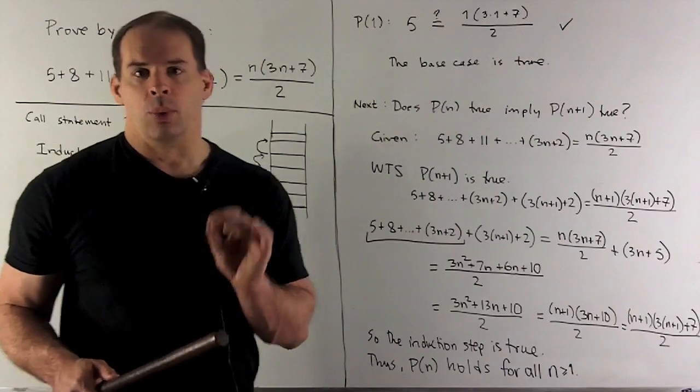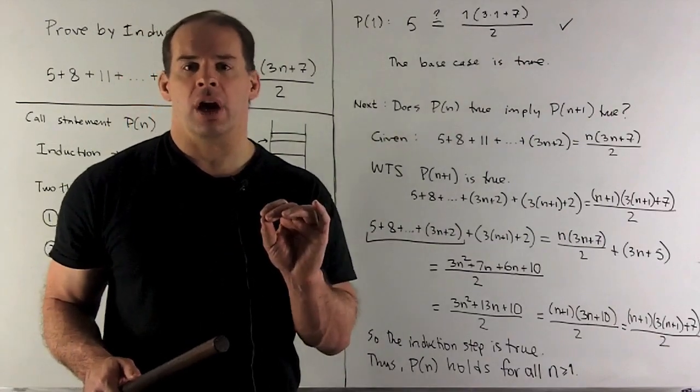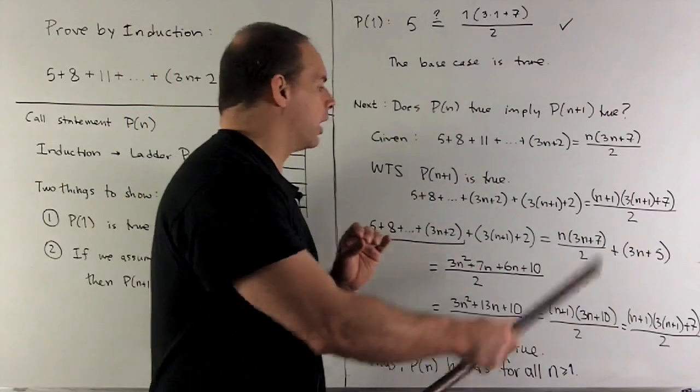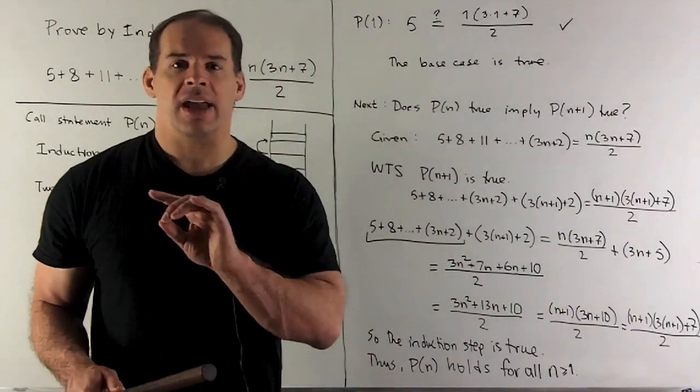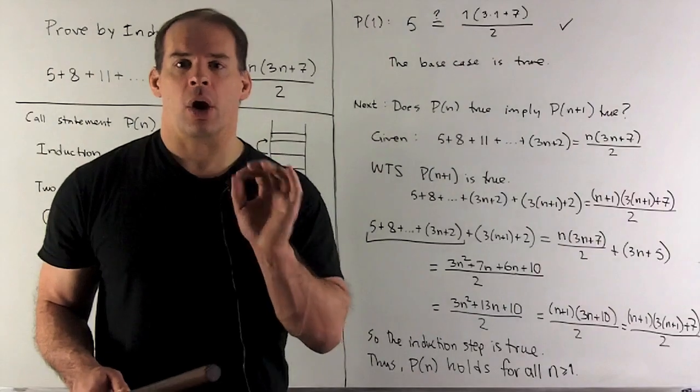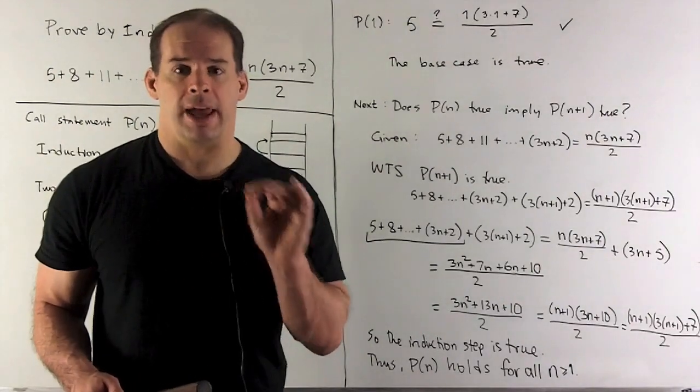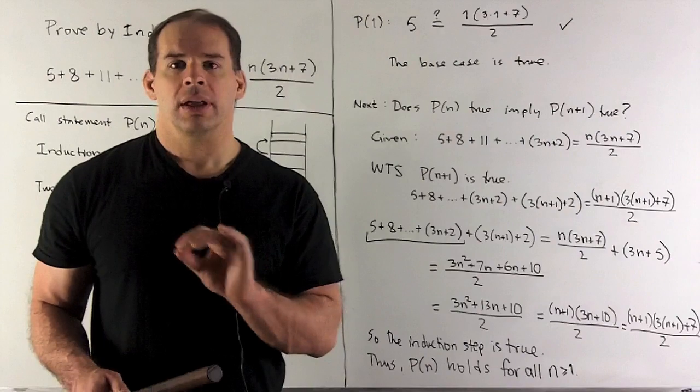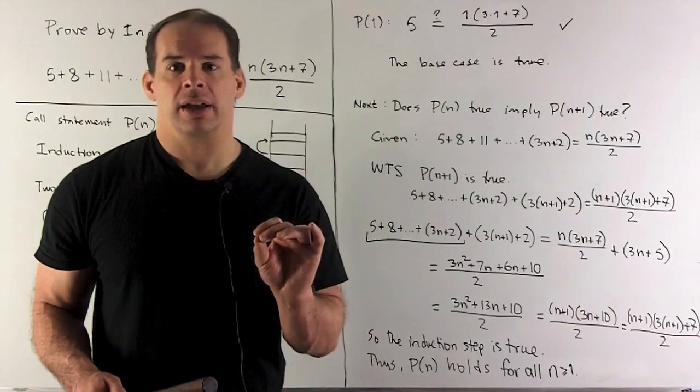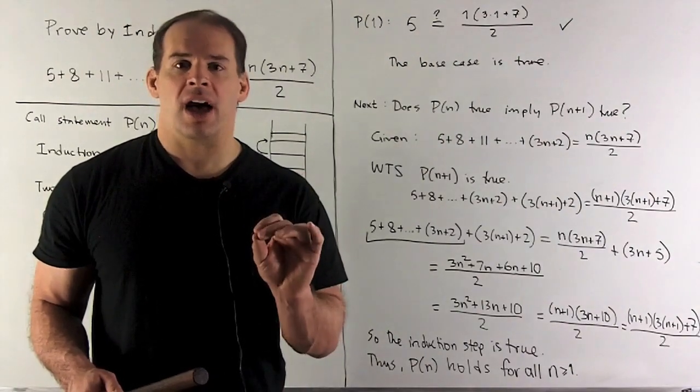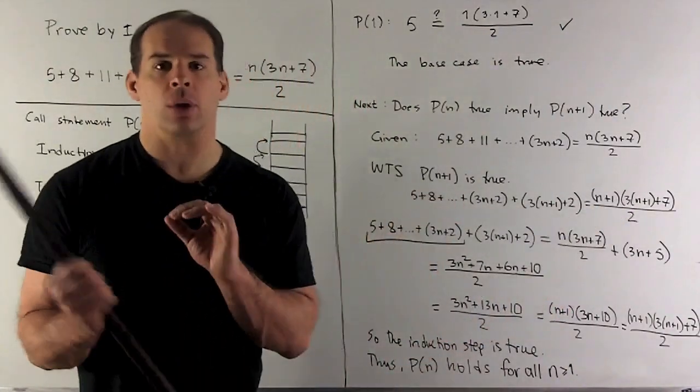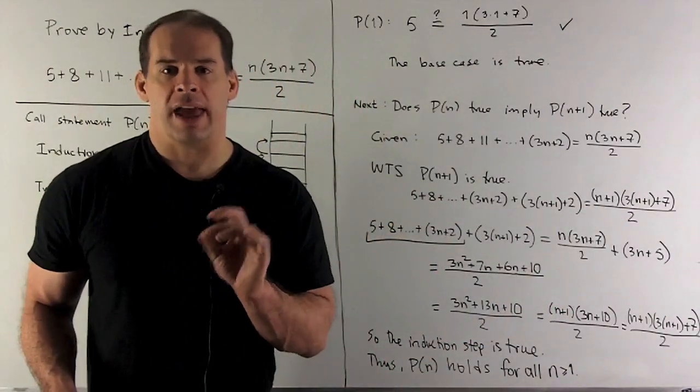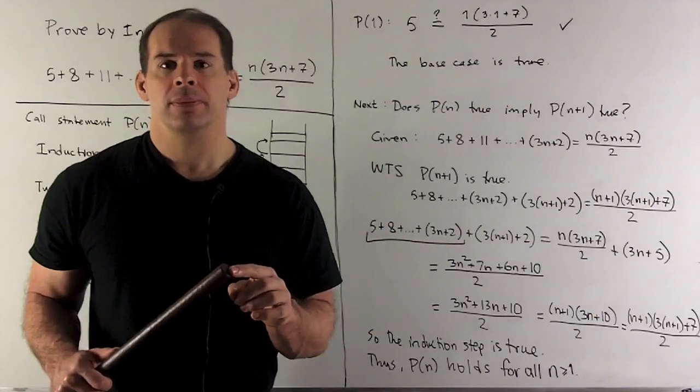The way induction arguments usually go, at least for the type we're doing here, we're going to take one side of P(n+1), and we're going to work off of that. So we'll substitute something from P(n), we'll work, and then at some point, we'll get stuck. The way you get unstuck is to go to the other side of P(n+1), and then work your way backwards. Then you usually meet in the middle.